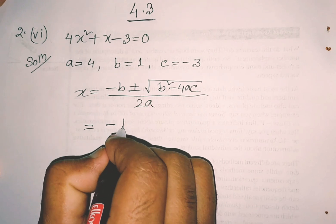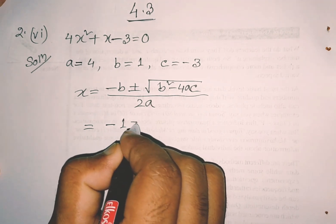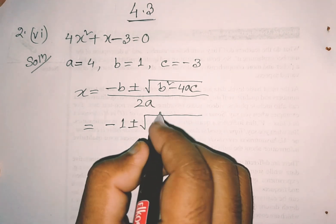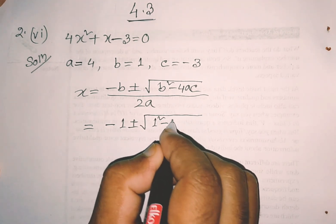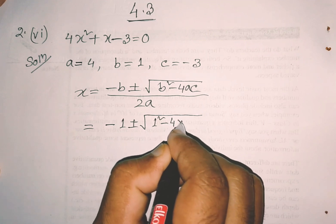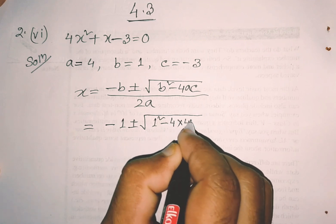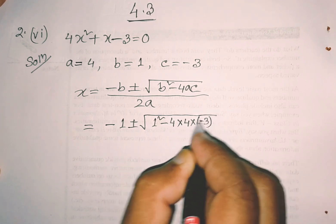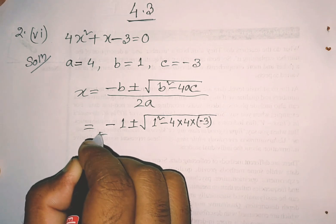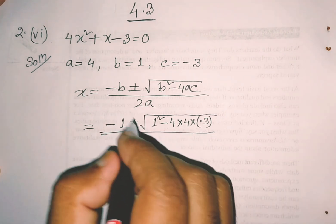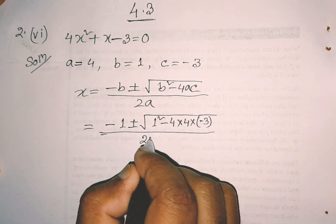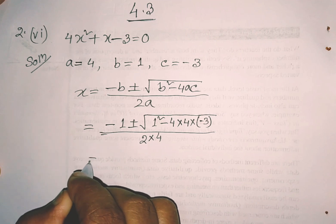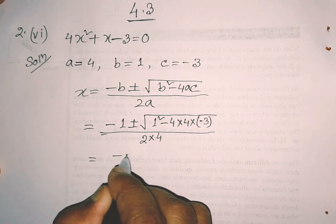Minus b — b is 1. Plus or minus root over b square — that is 1 square — minus 4, a is 4, c is minus 3. Divided by 2a, which is 2 into a = 4, so 2 into 4. That gives minus 1 plus or minus root over 1.